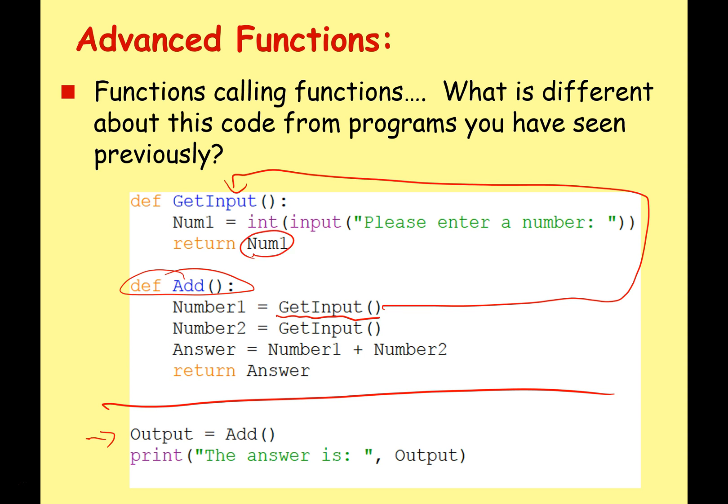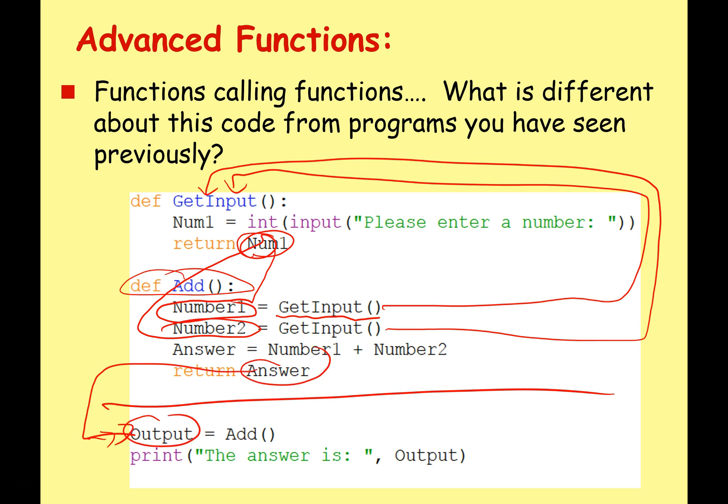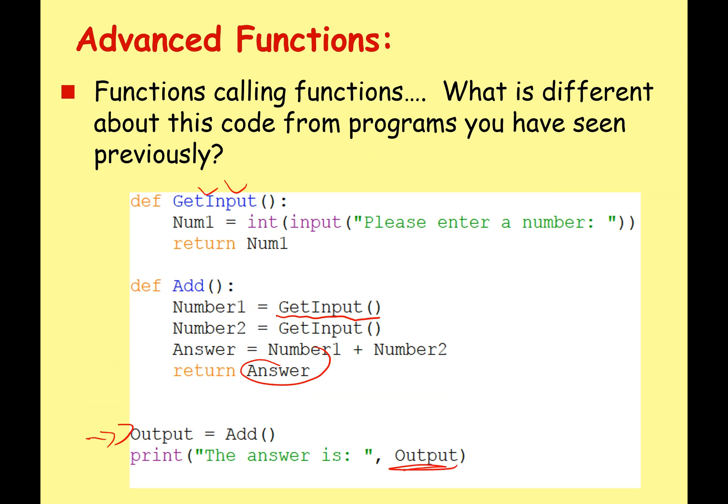And then it returns Num1 which becomes Number1 in the other function. And it's the same with Number2, let's call this function which returns a value which now becomes Number2. Now we can do the calculation and return the Answer which becomes Output which we can then print. So all we're doing is calling a function from within a function.